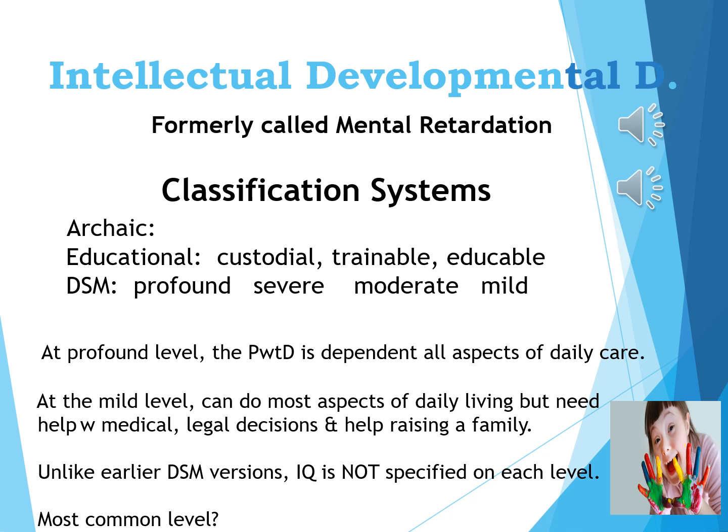The terms I'm alluding to were idiot, imbecile, and moron. Idiot was the lowest IQ level, whereas moron would border the normal intellectual range. We don't use these terms today. We'd use the DSM terms of mild, moderate, severe, and profound.